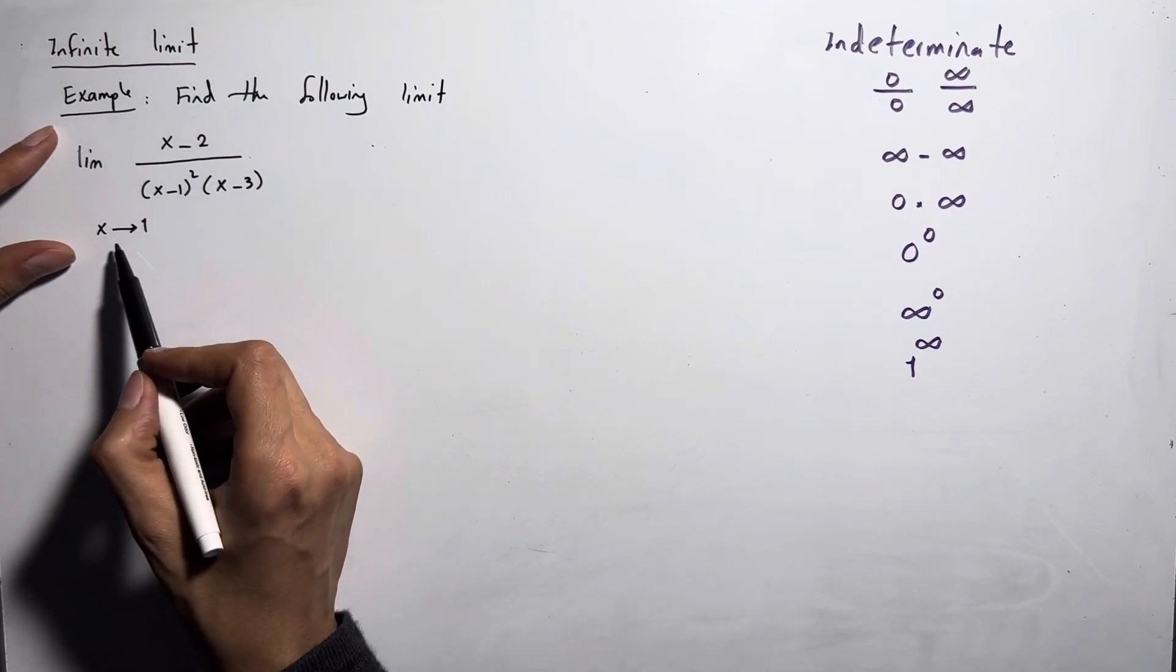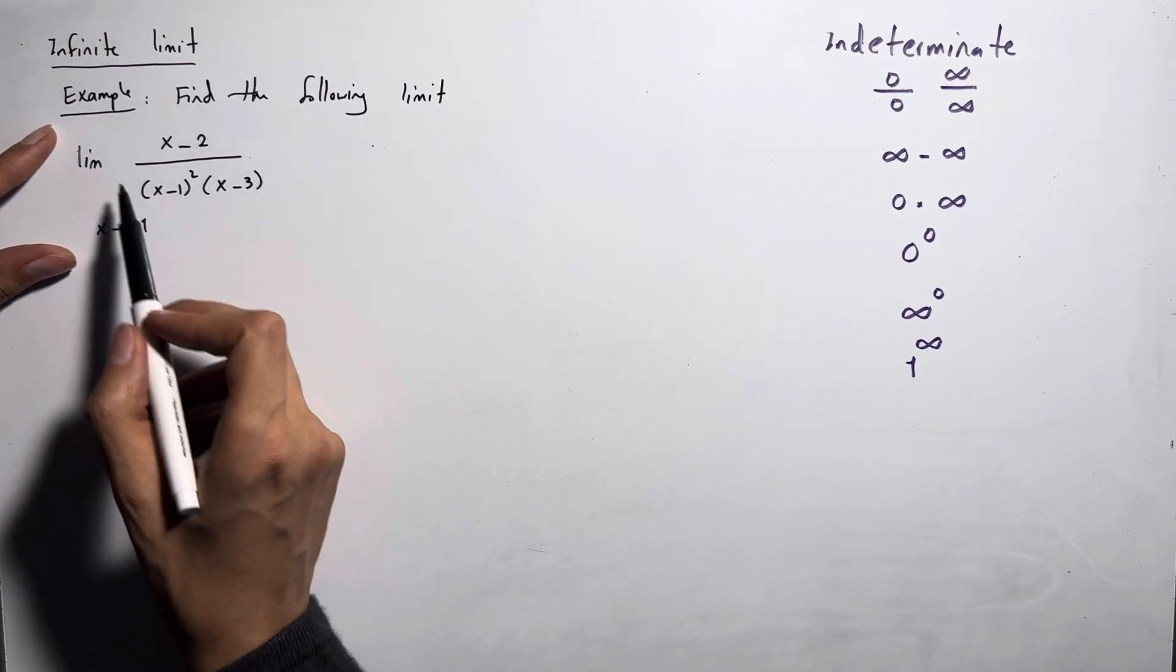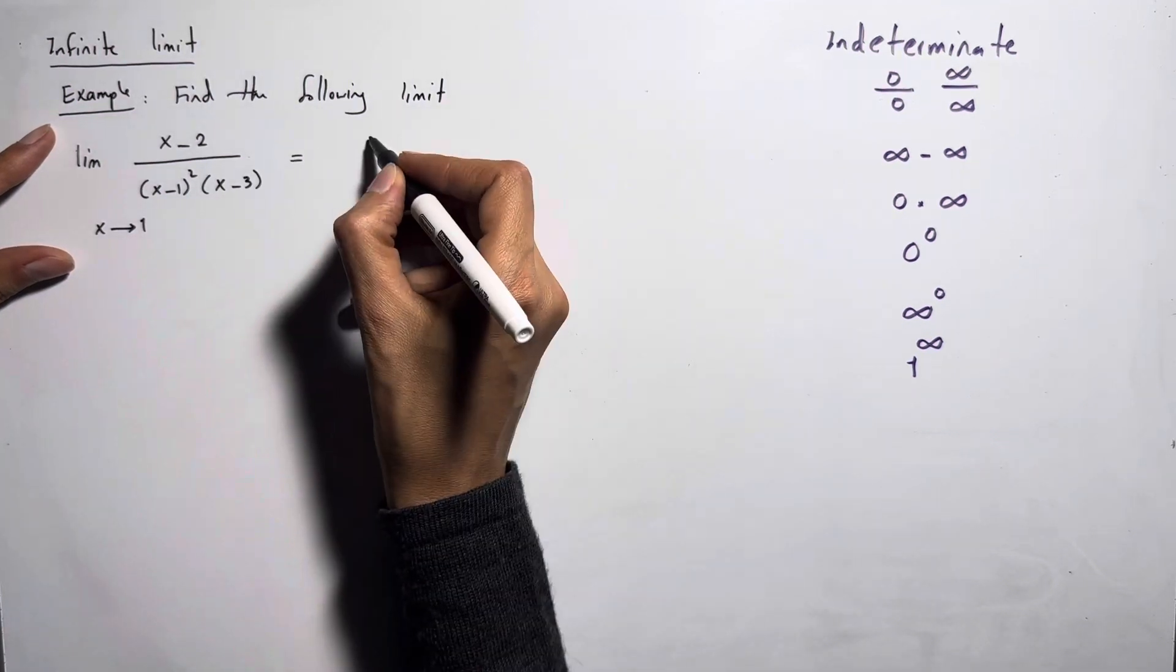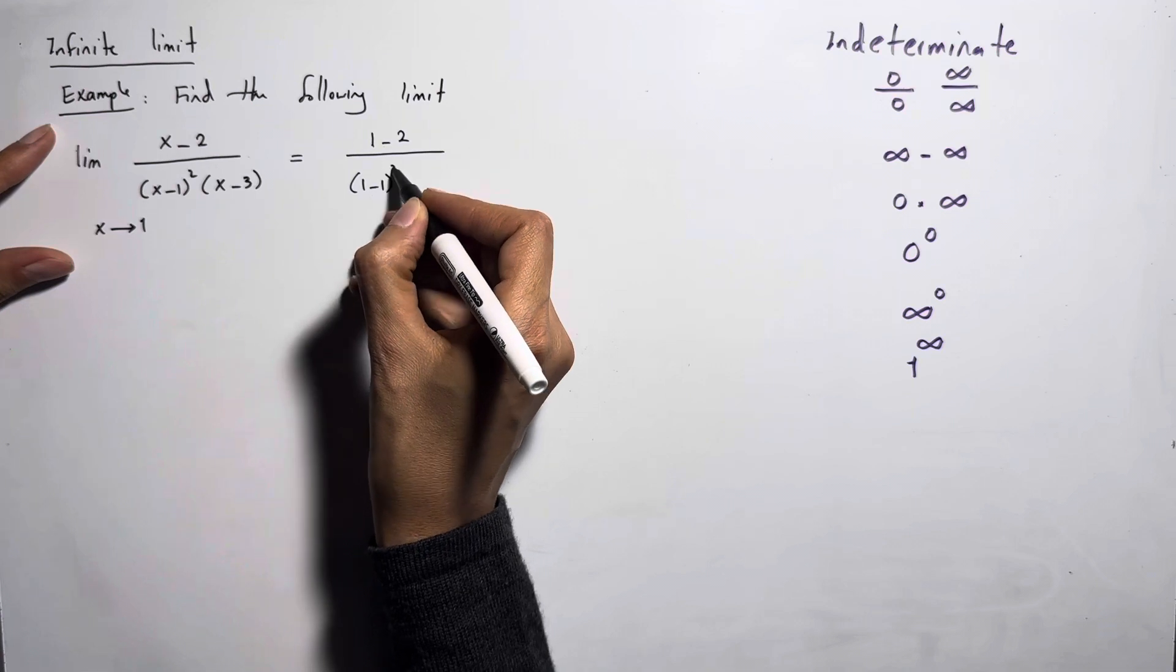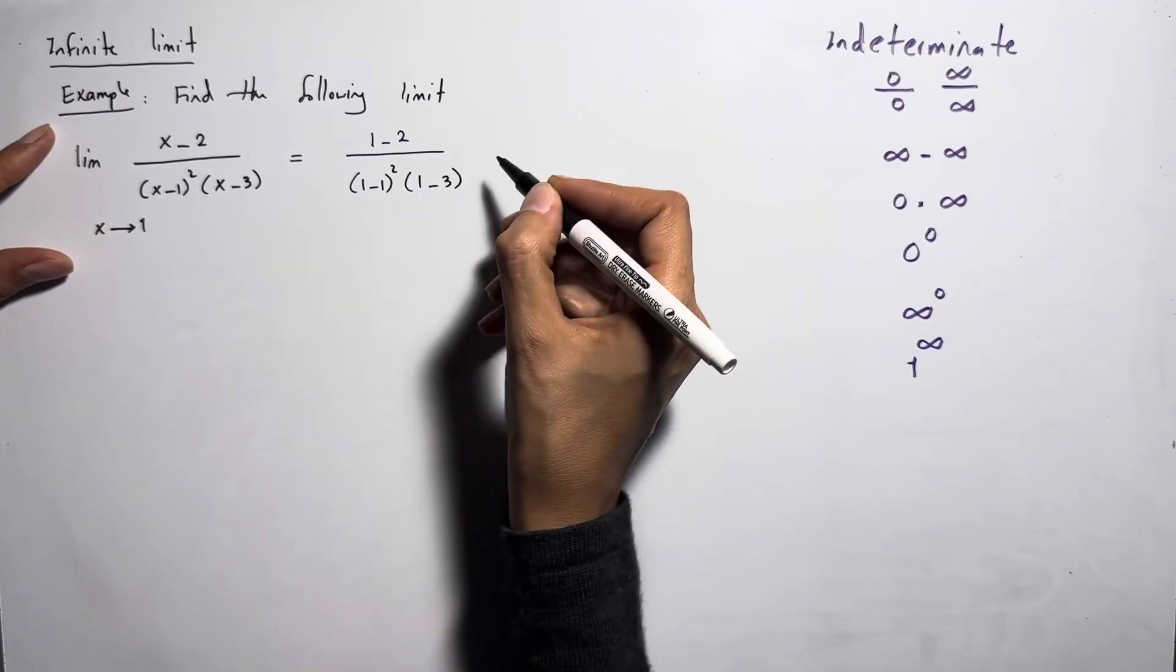If I basically plug in x equals 1 here, you have 1 minus 2 divided by 1 minus 1 to the second power and 1 minus 3.